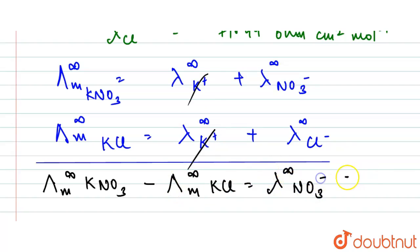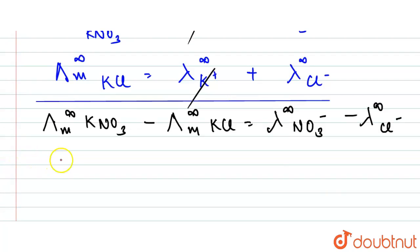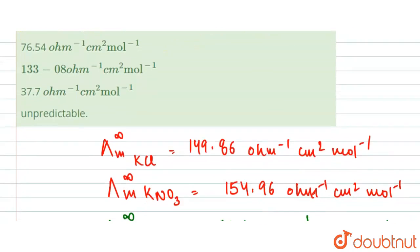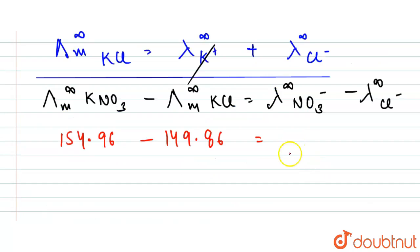So now here what we have for KNO₃, we are given 154.96 minus 149.86, right, 149.86, and then what we have is 71.44 for Cl⁻, here we have 71.44.